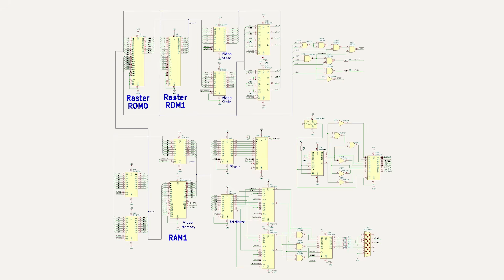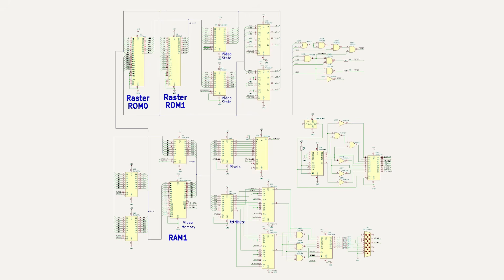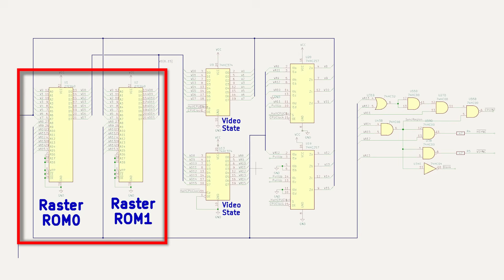The biggest change this time is that I'm running two static RAMs — one for the CPU and one for video. That just makes life simpler while I'm debugging. And honestly, debugging is always harder than design, so I always lean towards debug-friendly prototypes rather than chasing the perfect final design on the first try. I'm also trying out two 8-bit EPROMs for the raster generator — no magic reason, just to prove that it works both ways.